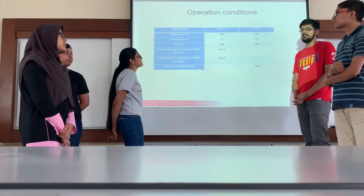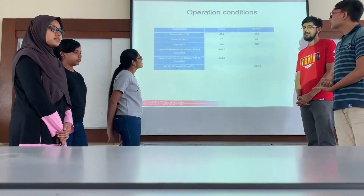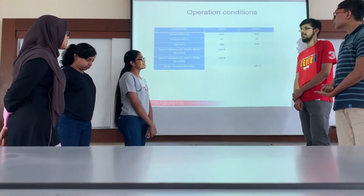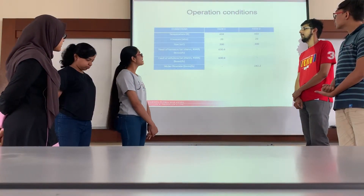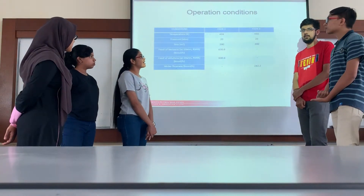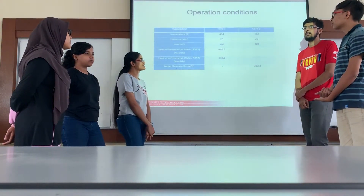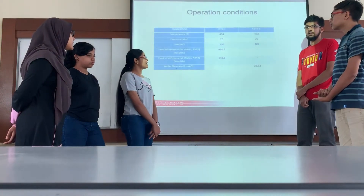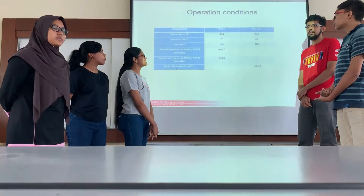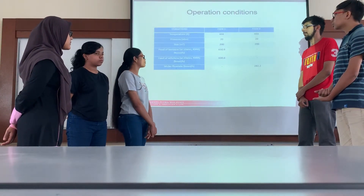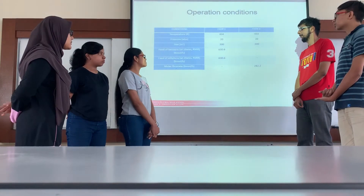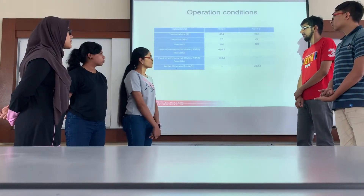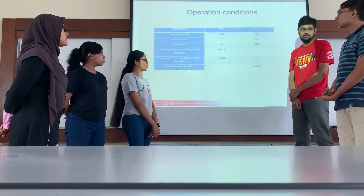Now I will explain more about the operating conditions for both CSTRs. For the first CSTR, the operating temperature is 434 Kelvin, and for the second CSTR it is 433 Kelvin. Both CSTRs have the same pressure, which is 20 atm, and the size is also the same at 200 cubic meters. The feed of benzene at 20 atm and 430 Kelvin is 630.6 kmol per hour. And the molar flow rate for the second CSTR is 282.2 kmol per hour.